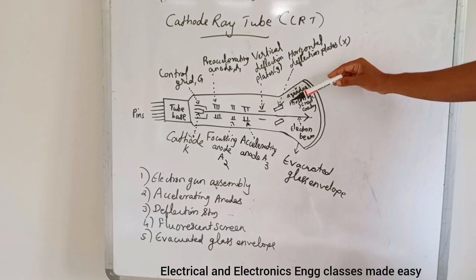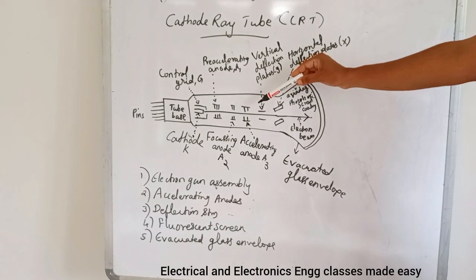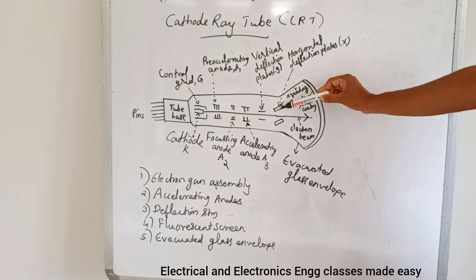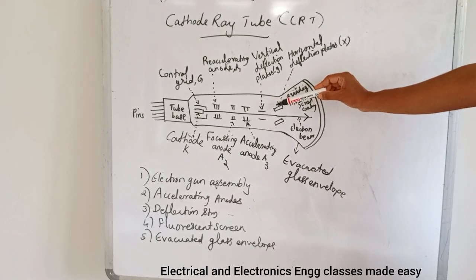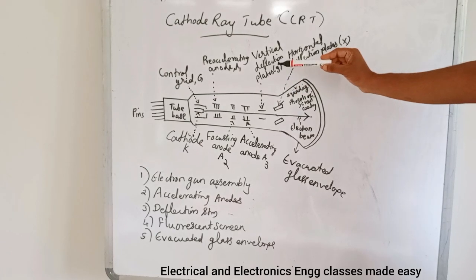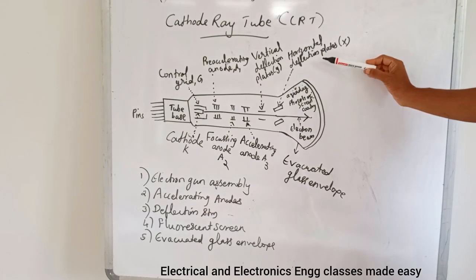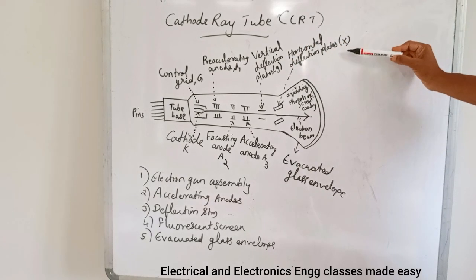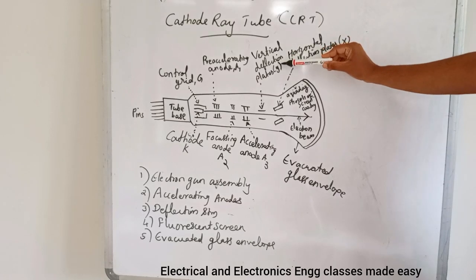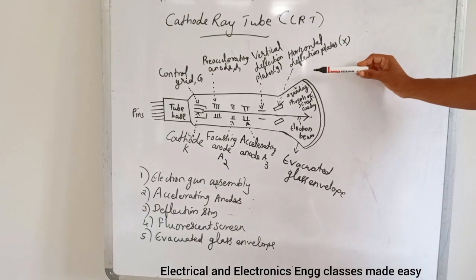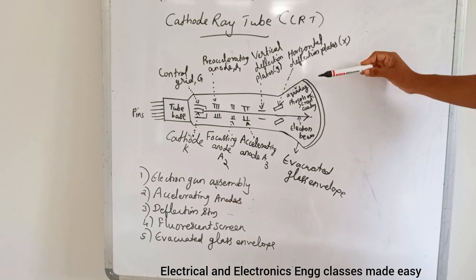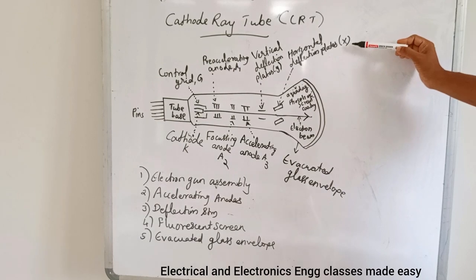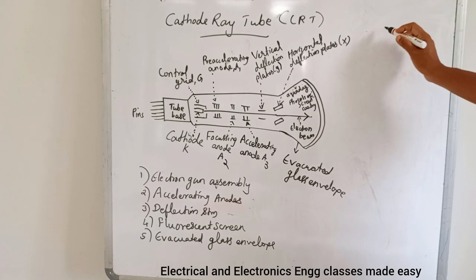After the electrons leave the electron gun assembly, they pass through a region controlled by the deflection plates. The deflection system consists of a pair of horizontal deflection plates and vertical deflection plates. The horizontal deflection plates are called X plates and the vertical deflection plates are called Y plates. A positive voltage applied to the X plate will deflect the beam towards the right, that is the positive X axis.